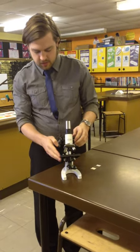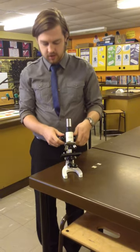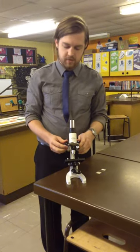Next thing you need to make sure you do, the stage needs to be at its absolute lowest. So use the turning knobs to make the stage go all the way down to the bottom so it's as far away from the lens as possible.